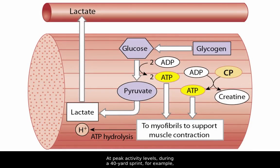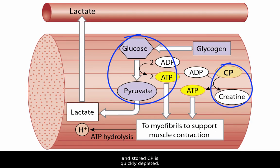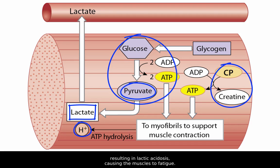At peak activity levels, during a 40-yard sprint for example, ATP demand is enormous, and the mitochondria cannot absorb oxygen rapidly enough to meet the demand. So glycolysis is the only pathway producing ATP, and stored CP is quickly depleted. Pyruvate and hydrogen ions accumulate within the cytosol, resulting in lactic acidosis, causing the muscle to fatigue.